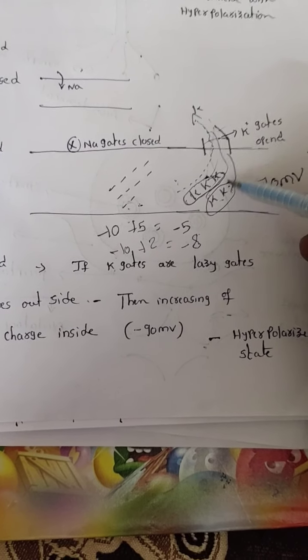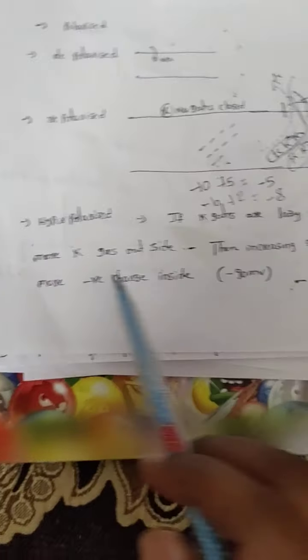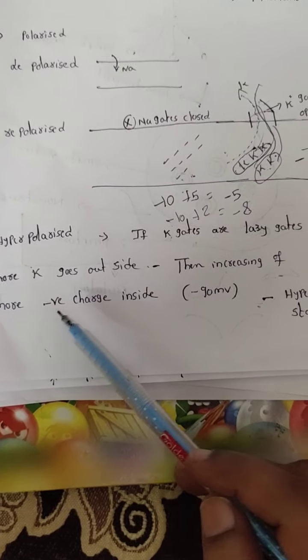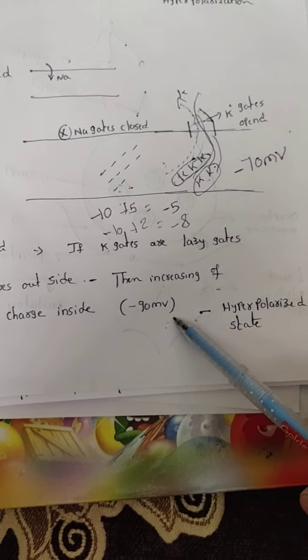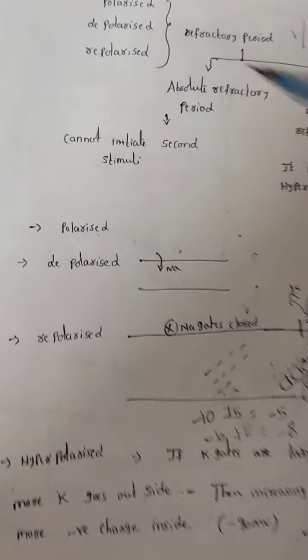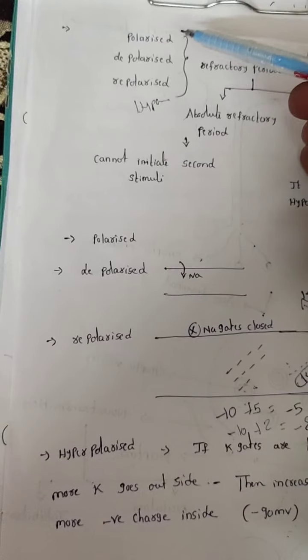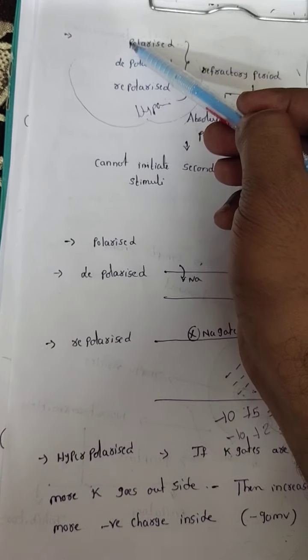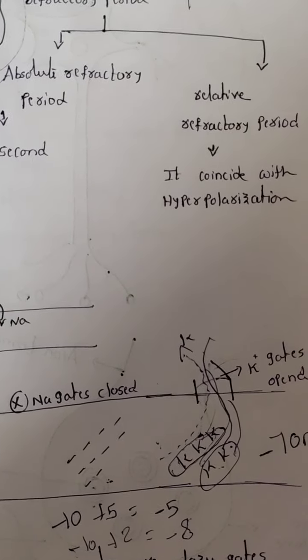Because potassium gates are lazy gates, more potassium goes outside, increasing negative charges inside. When it reaches minus 90 millivolts, that state is called the hyperpolarized state. After repolarization, the next state is hyperpolarization. The time period from polarized to hyperpolarized is the relative refractory period. The absolute refractory period takes more time than the relative refractory period.